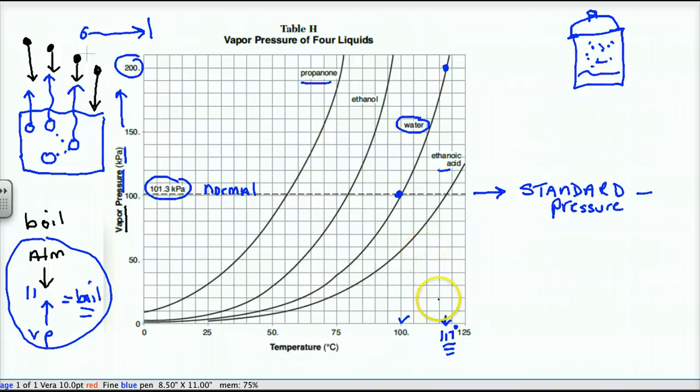What would be the atmospheric pressure if water boils at 117? I look at my 117, I see where my line hits, and then I'm going to read across. The atmospheric pressure would be 200 kilopascals when water boils at 117. Very simple.